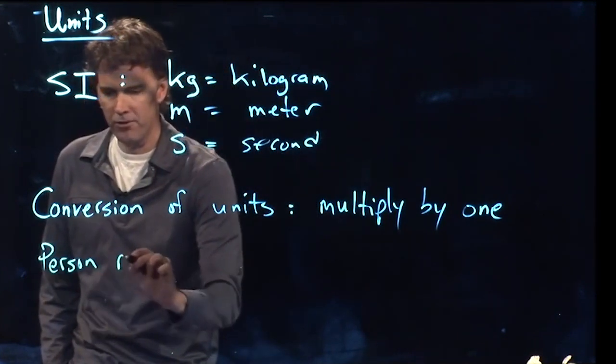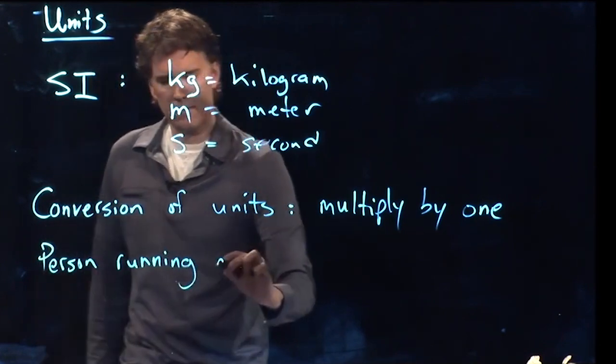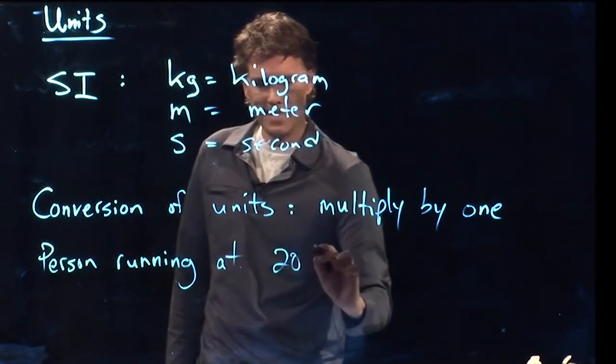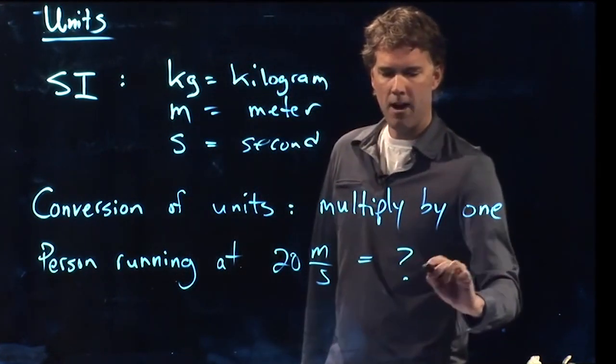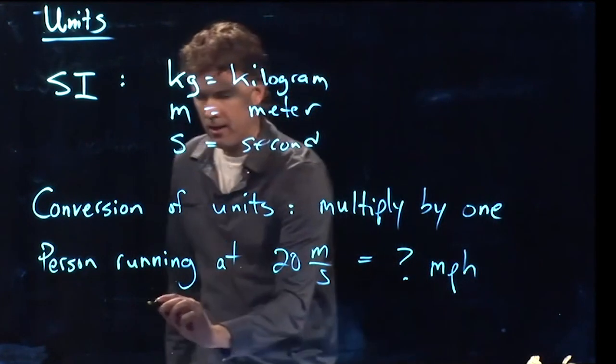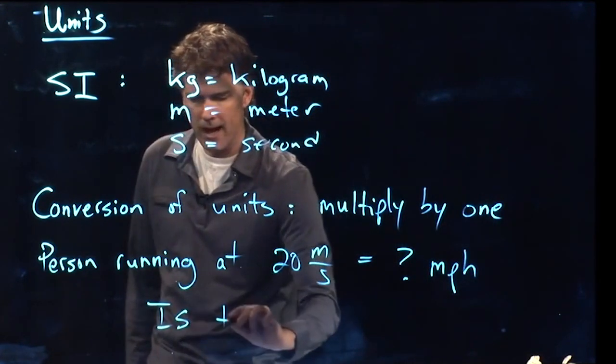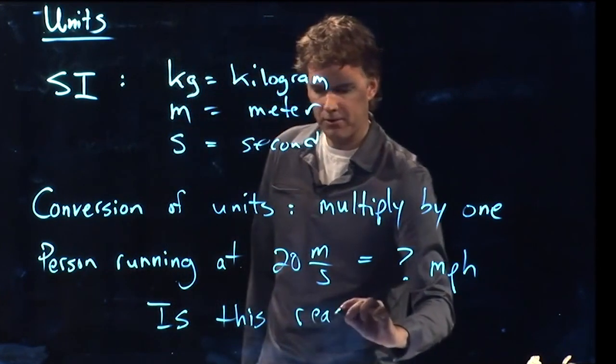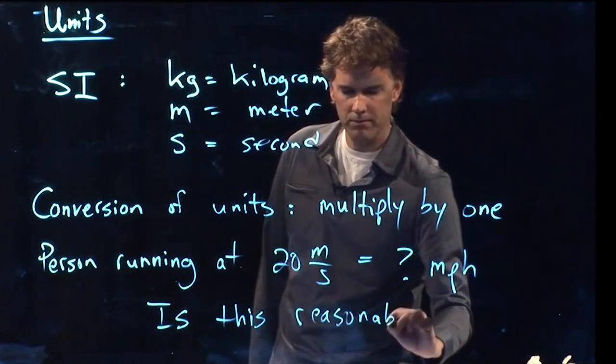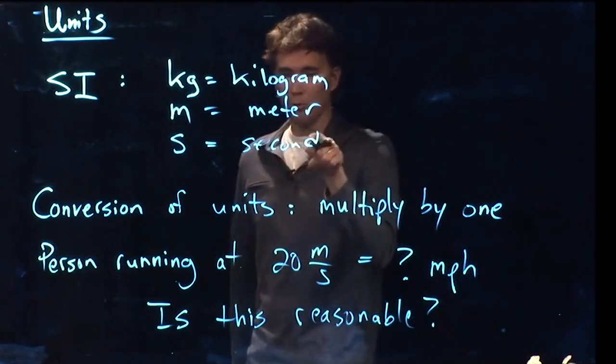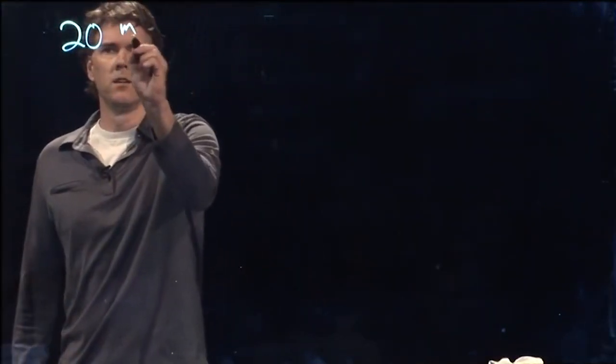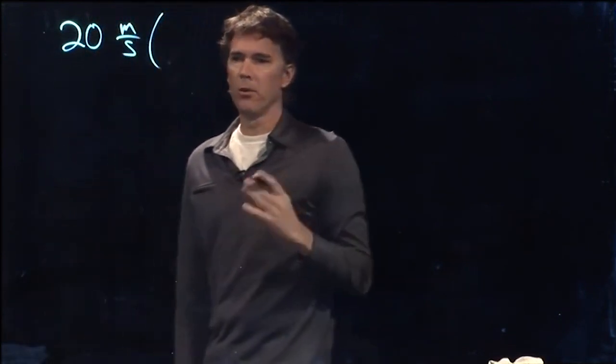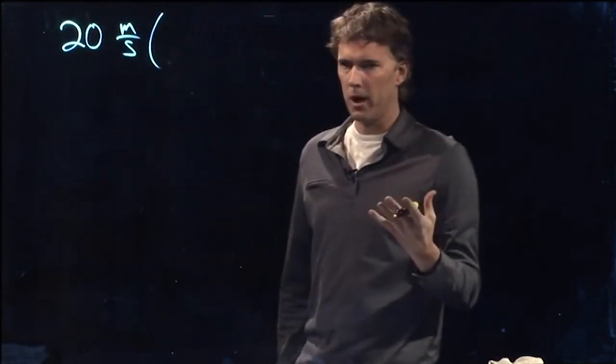And let's ask the following question. Let's say we have a person running and they're running at 20 meters per second. How fast is that in miles per hour? And before we do that, let's ask this question: Is this reasonable? Should they be able to run at 20 meters per second? So let's convert 20 meters per second to miles per hour. And what we said is all we have to do is multiply by one every time.